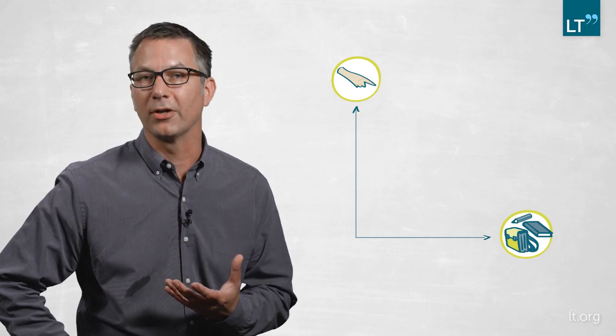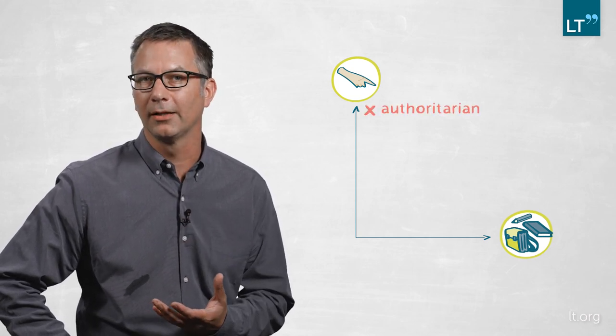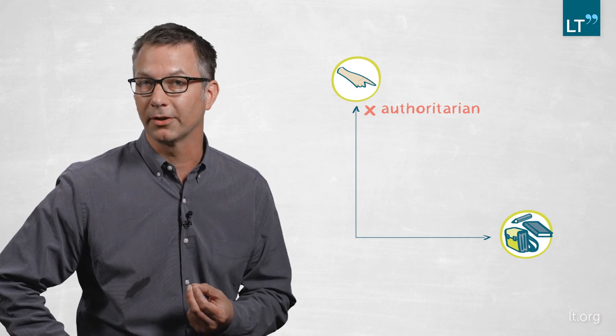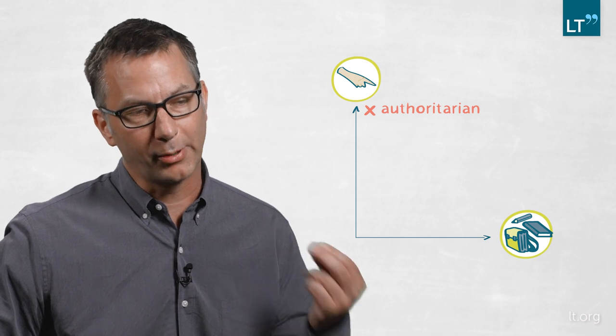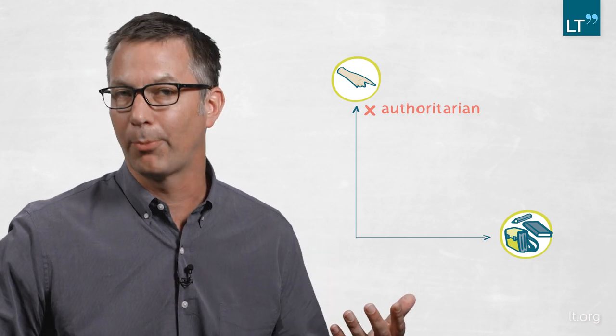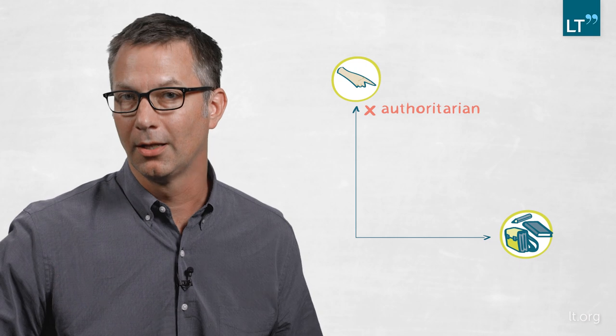the defining characteristic of the authoritarian parenting style is to demand obedience of the children. The children are supposed to do what the parents want. And so we're going to call a parent who replies on the survey that obedience is important—we're going to call them an authoritarian parent.